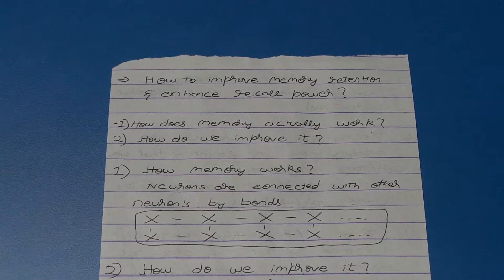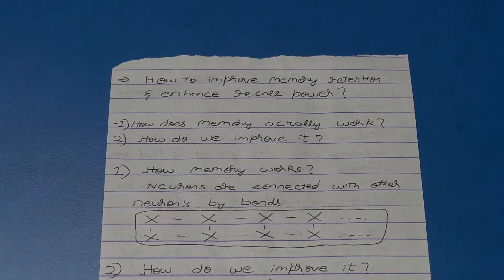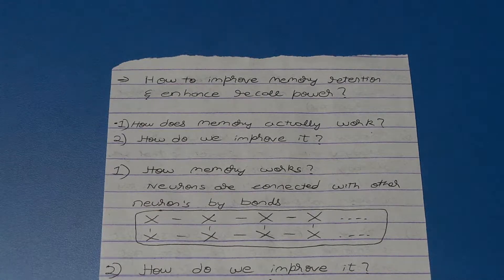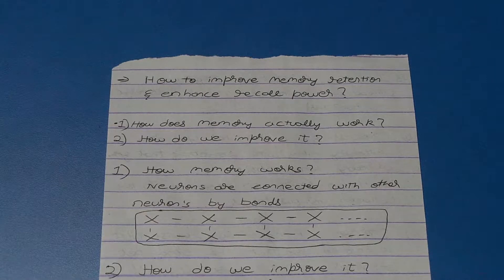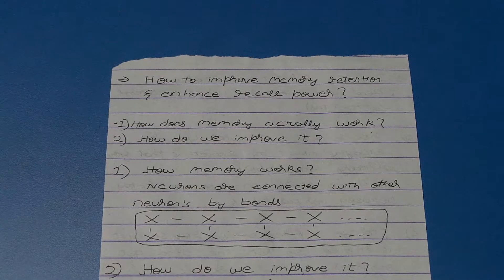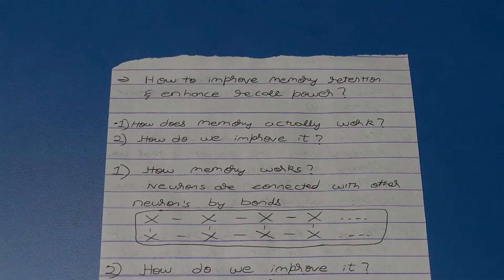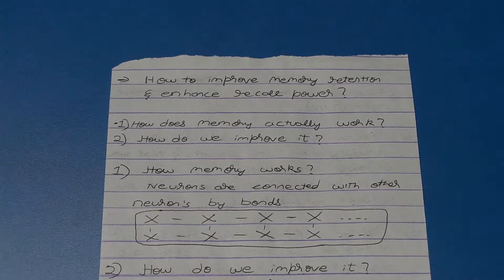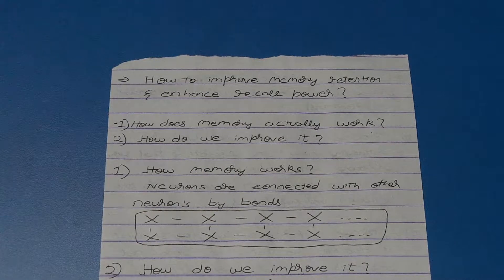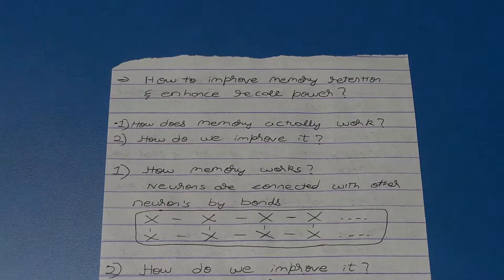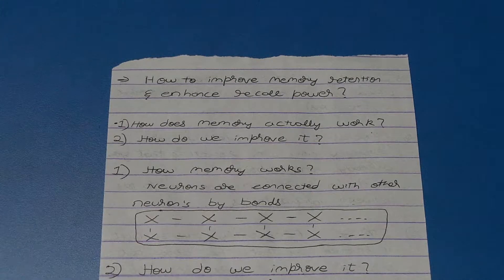Before we actually get to the technique of how we can improve our memory, we will first understand how human memory actually works. The single unit of human brain is called a neuron, and neurons are linked to each other through bonds. The stronger these bonds are, the longer that information stored in them can be held and the easier it will be to recall.